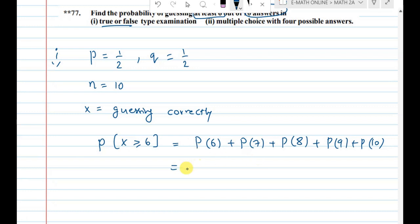So, we can write this as sigma P, r equal to 6 to 10. So we write 6 as lower limit, 10 as upper limit, nCr.